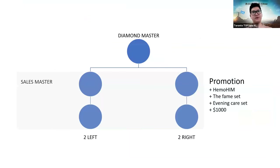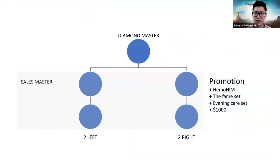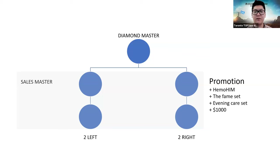From Sales Master to Diamond Master, it's all about creating individuals through duplication. You experience Sales Master, then you want to duplicate that in the members underneath you — finding like-minded people who want to succeed in Atomy. If you create two on your left and two on your right, you promote yourself to Diamond Master. The promotional gift for Diamond Master is a MoHIM set, Evening Care Kit, and $1,000 cash value.